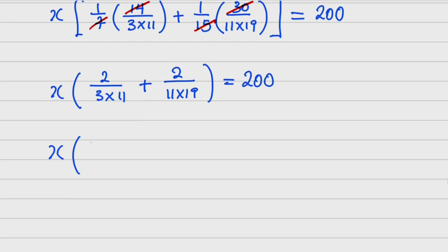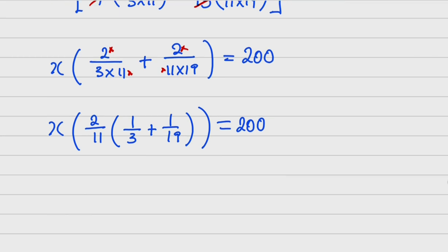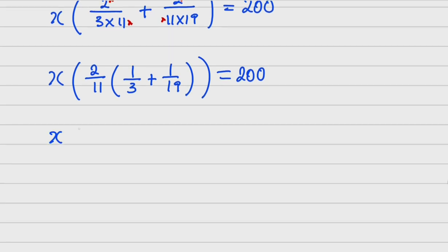Now I can factorize again. I see 2 and 11 are common in both terms, so I factorize 2/11 out, leaving (1/3 + 1/19) inside the bracket. Good — we're making good progress. So now I have x times 2/11 times (1/3 + 1/19) equals 200.